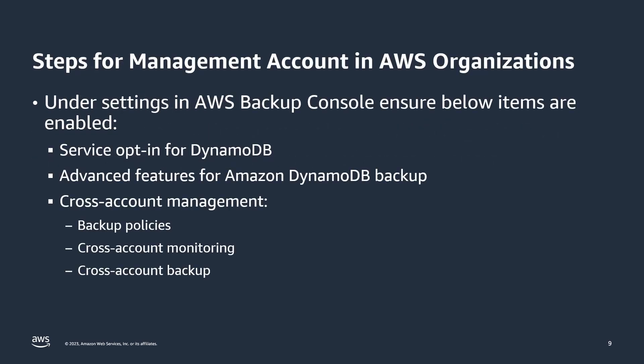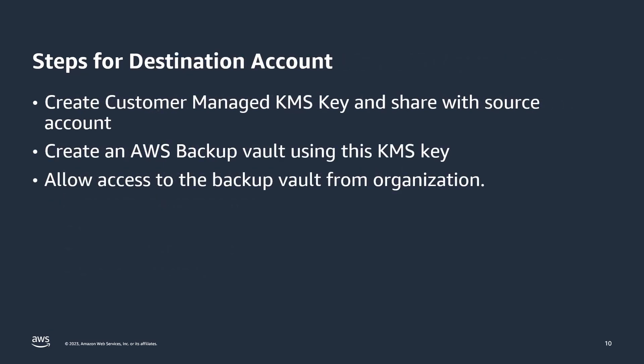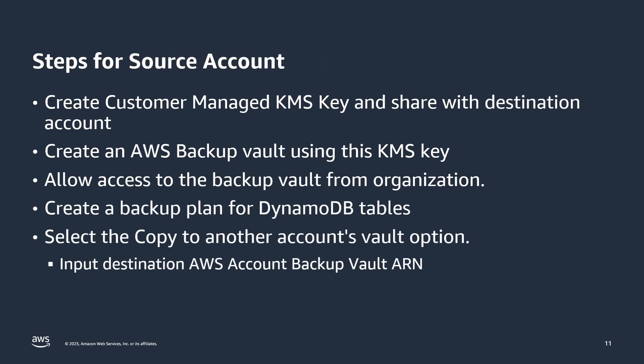Let's follow this process step by step. Go to the management account in AWS Organizations and make sure you have enabled the required items in AWS Backup settings. Then, in the destination account, create a customer-managed KMS key and share it with the source account. Then create a backup vault in the destination account using that KMS key and allow access to this backup vault from the organization. Similarly, create a customer-managed KMS key in the source account and share it with the destination account, then create a backup vault in the source account and allow access from AWS Organizations.